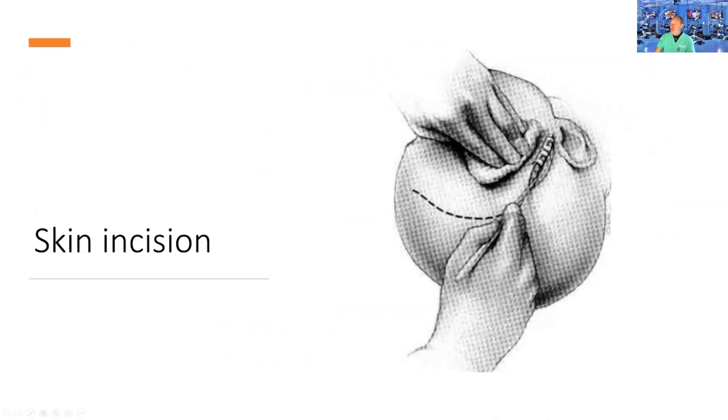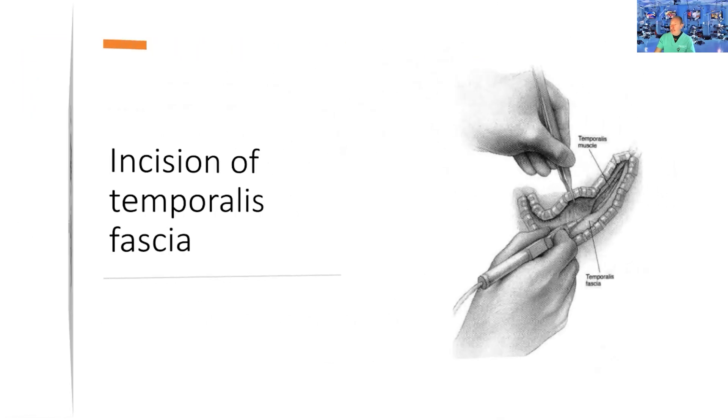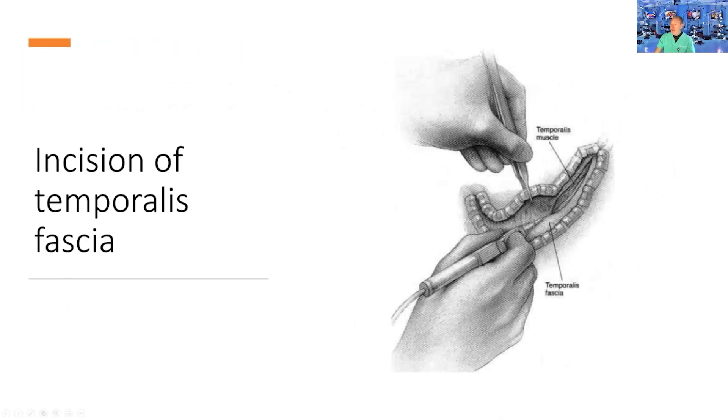The incision goes through all layers down to the bone. I reflect them anteriorly, including the temporalis fascia. When we do the orbital zygomatic approach, you have to go all the way down to the zygomatic arch.